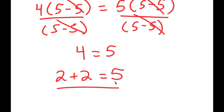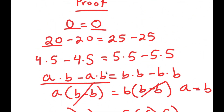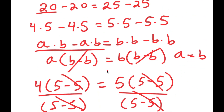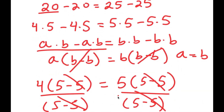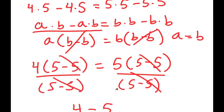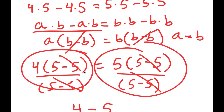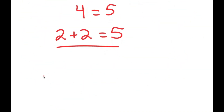Now I know what you're thinking — this is mathematically incorrect, right? How can 2 plus 2 equal 5 when 2 plus 2 is equal to 4? Well, look back and try to figure out where I made an error. The error is actually right here, in this step, where I divided both sides by (5 minus 5).